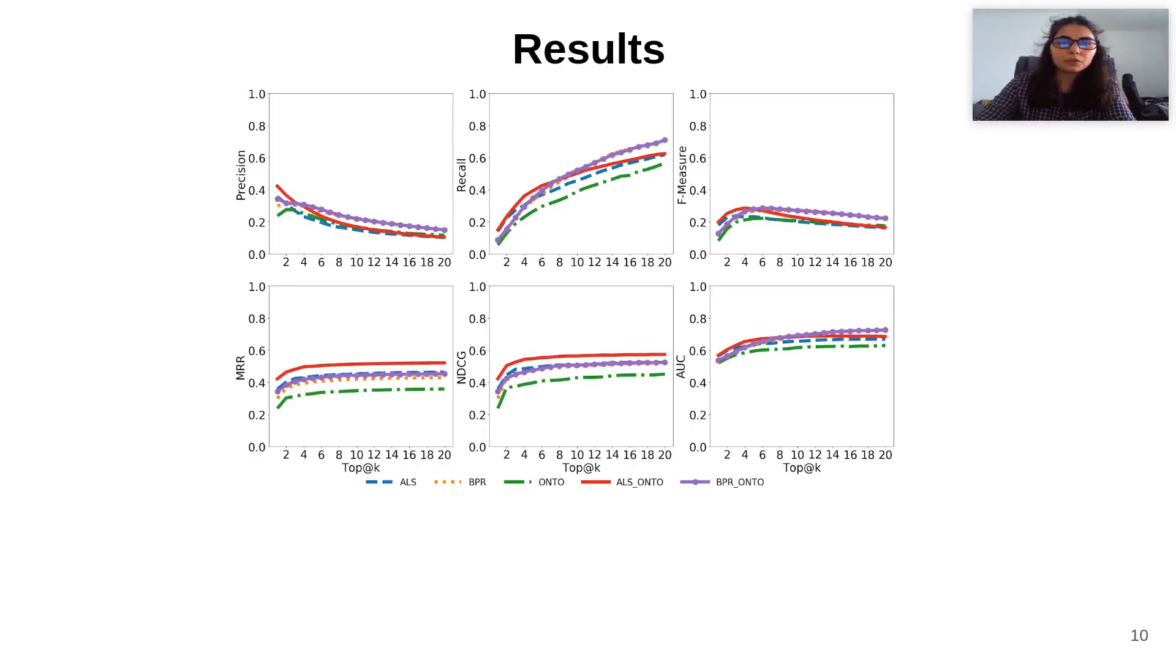For this work, we evaluated ALS, BPR, and ONTO algorithms alone, and the hybrids between ALS and ONTO, and BPR and ONTO. As we can see by the plots, the ONTO algorithm, in green, achieved the lowest results in all metrics. However, it follows the trend of the other algorithms.